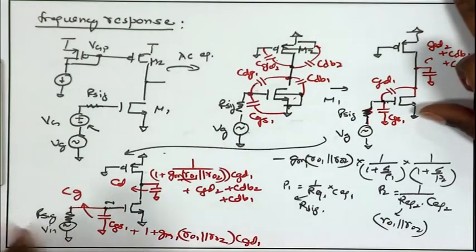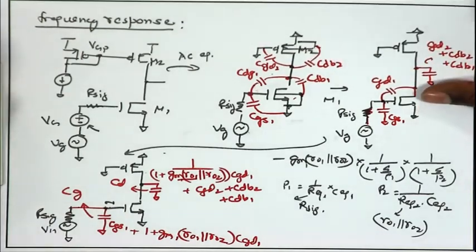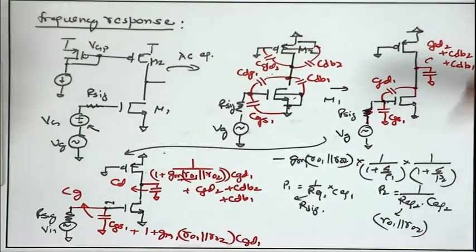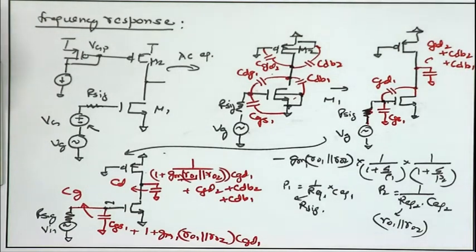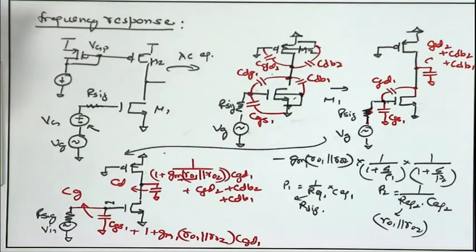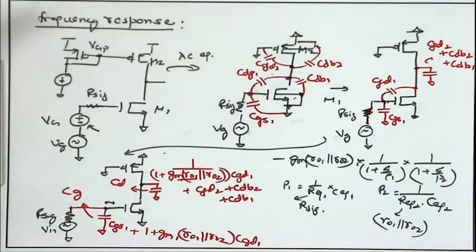We will cover the Bode plot and stability analysis for multi-pole systems. Yesterday we looked at 3 dB cutoff for a single-pole system with 20 dB/decade rolloff. For multiple poles, you get 20 dB/decade after the first pole and 40 dB/decade after the second — this will be covered tomorrow during stability analysis of the feedback amplifier.